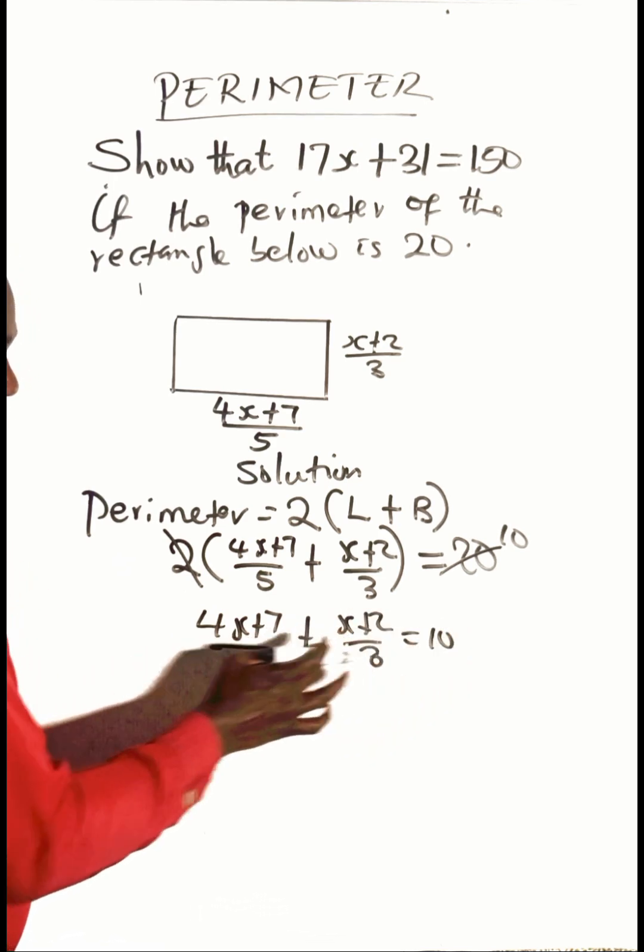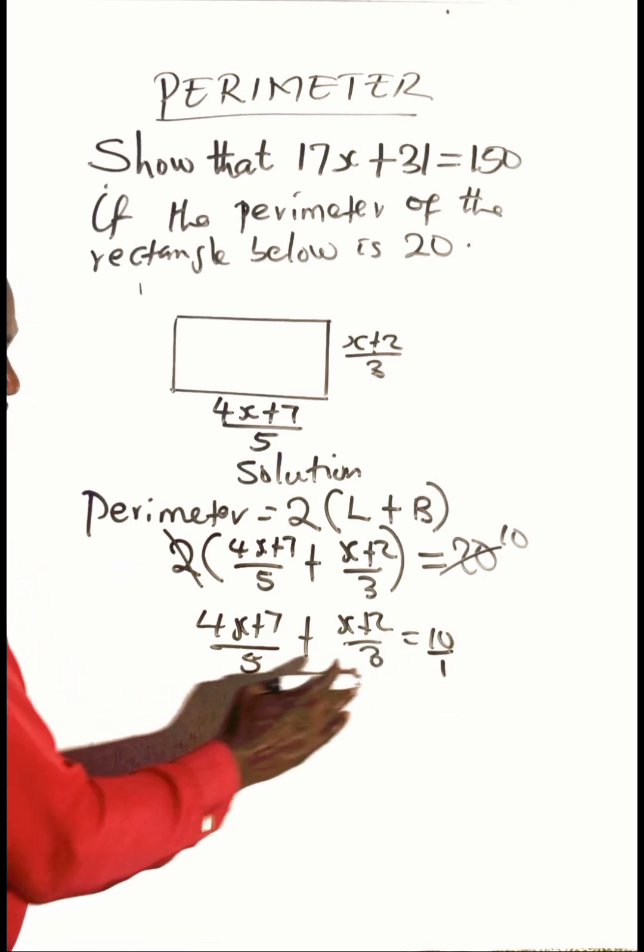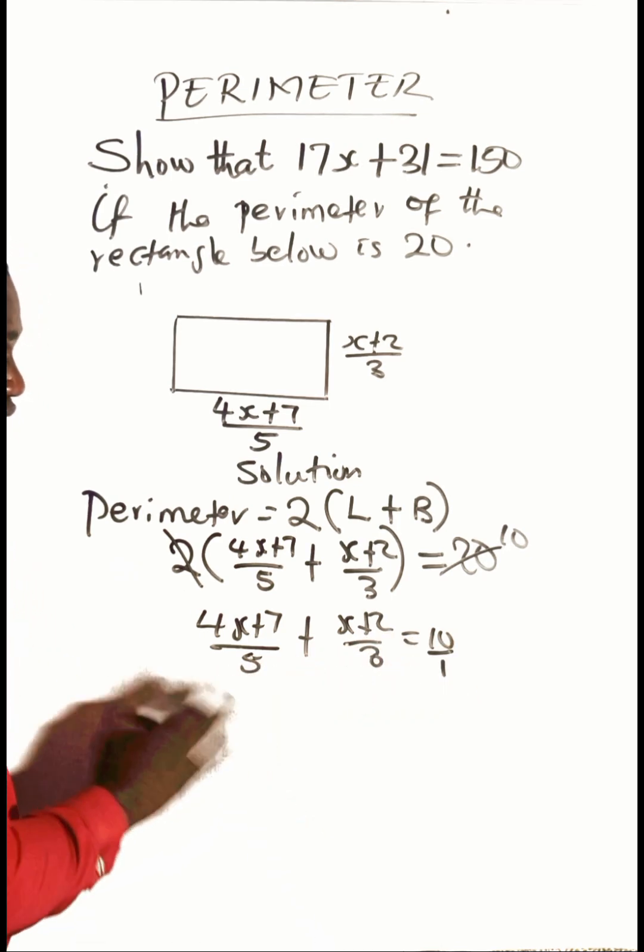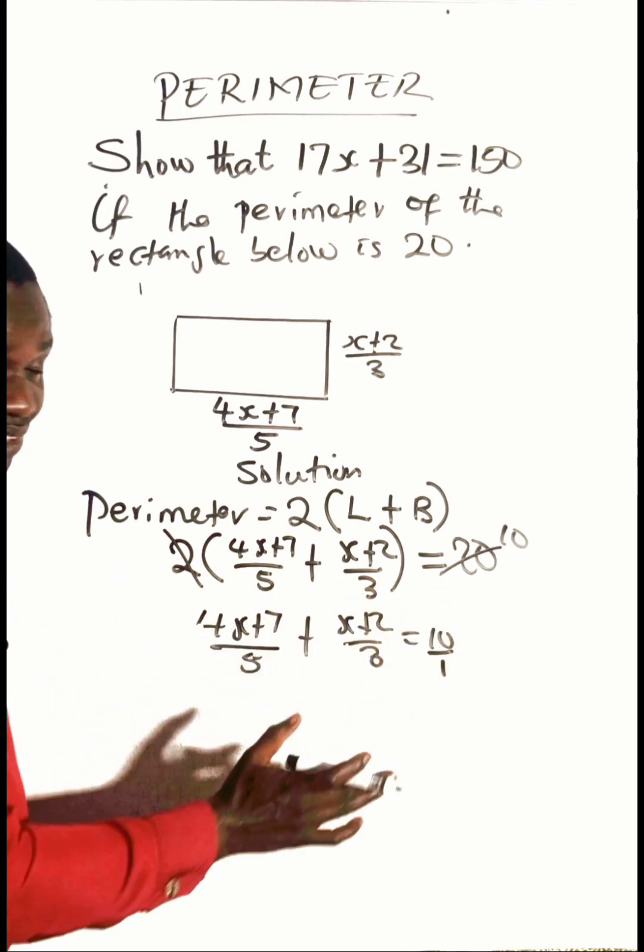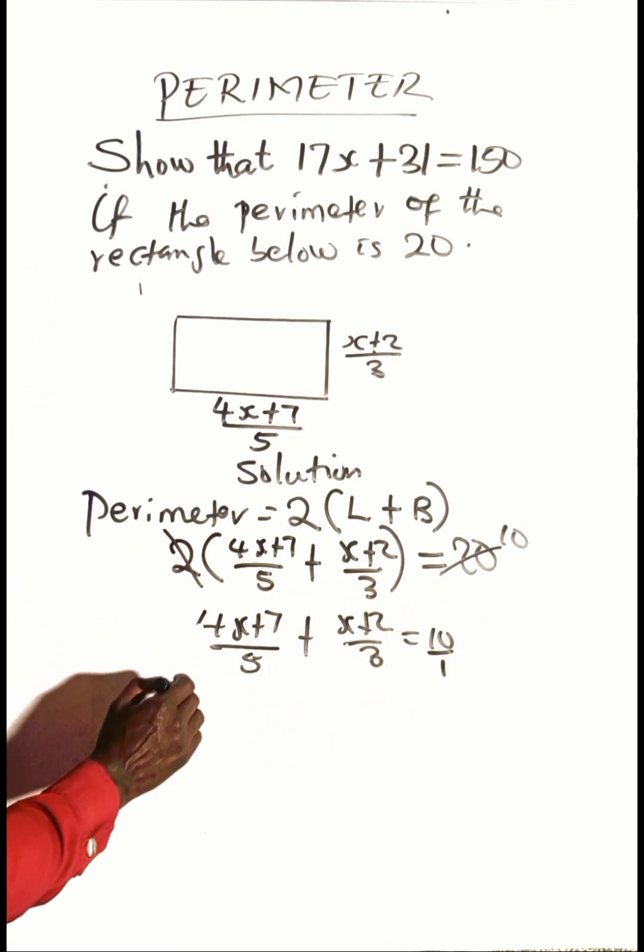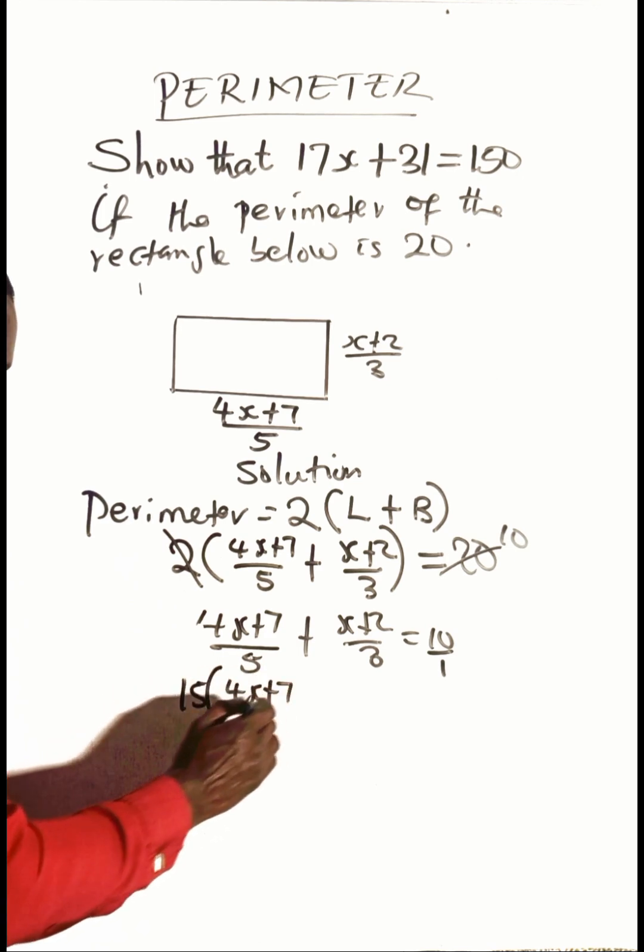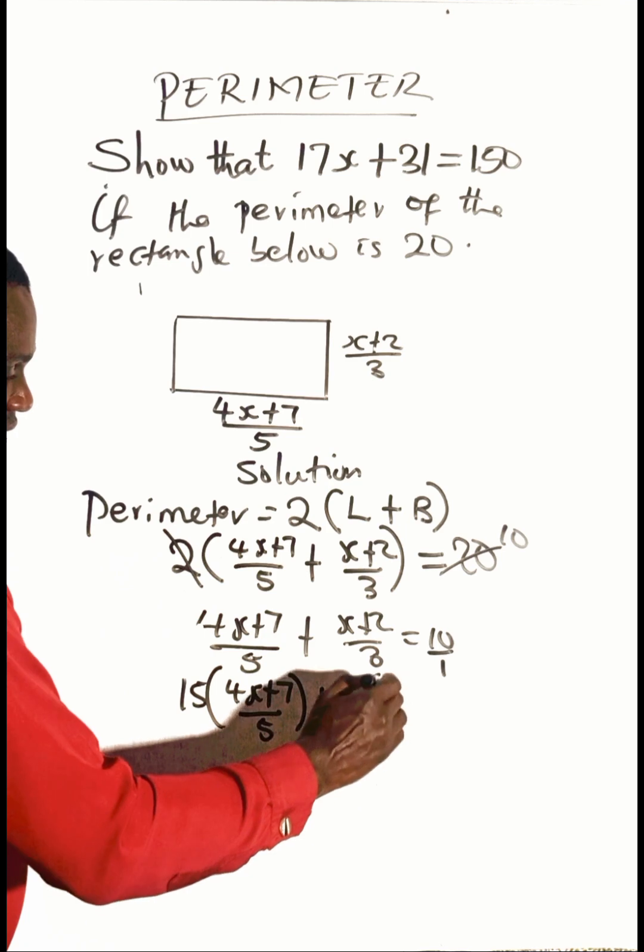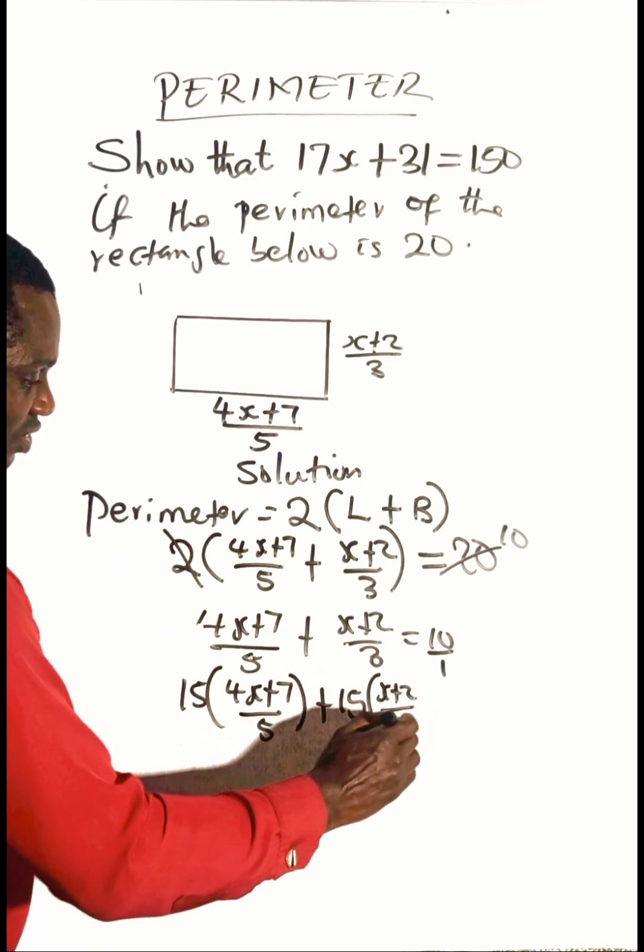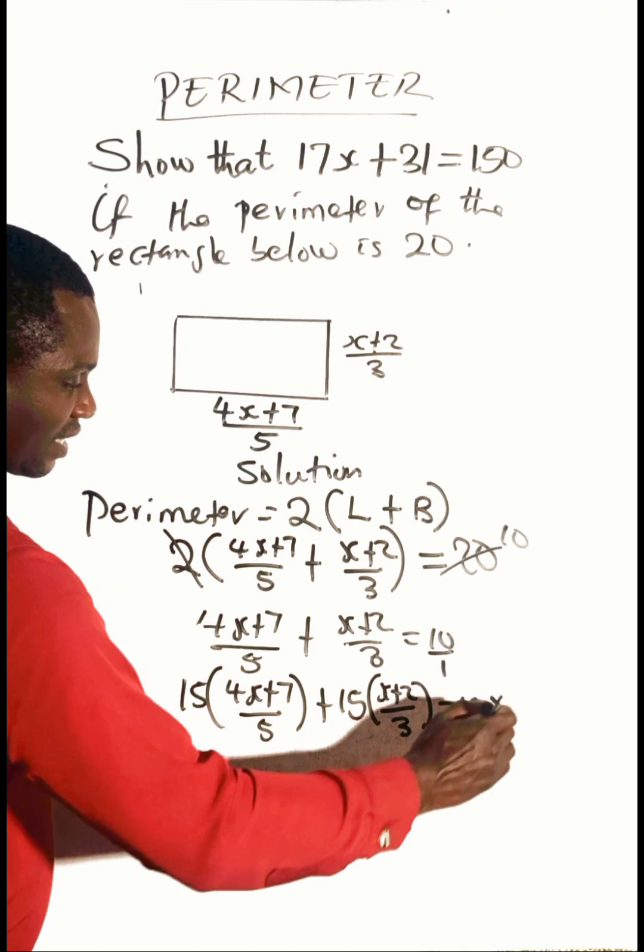Now how do we clear these fractions? This has a denominator of one and the LCM here is 15. If you multiply everything by 15, you'll be able to remove these fractions. So 15 multiplying 4x plus 7 over 5, 15 also multiplying x plus 2 over 3, and 15 multiplying 10.